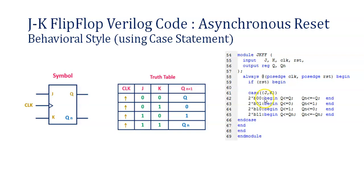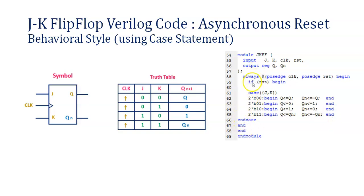The second case is 01, meaning J is 0 and K is 1 — output Q is assigned 0 and QN is assigned 1. The third case is 10, meaning J is 1 and K is 0 — output Q is assigned 1 and QN is assigned 0. The last case is 11, when both J and K are 1 — output toggles, so Q is assigned the complement of the previous Q, and QN is the complement. We then close endcase, end the if block, and end the always block, which is why two end statements are written.